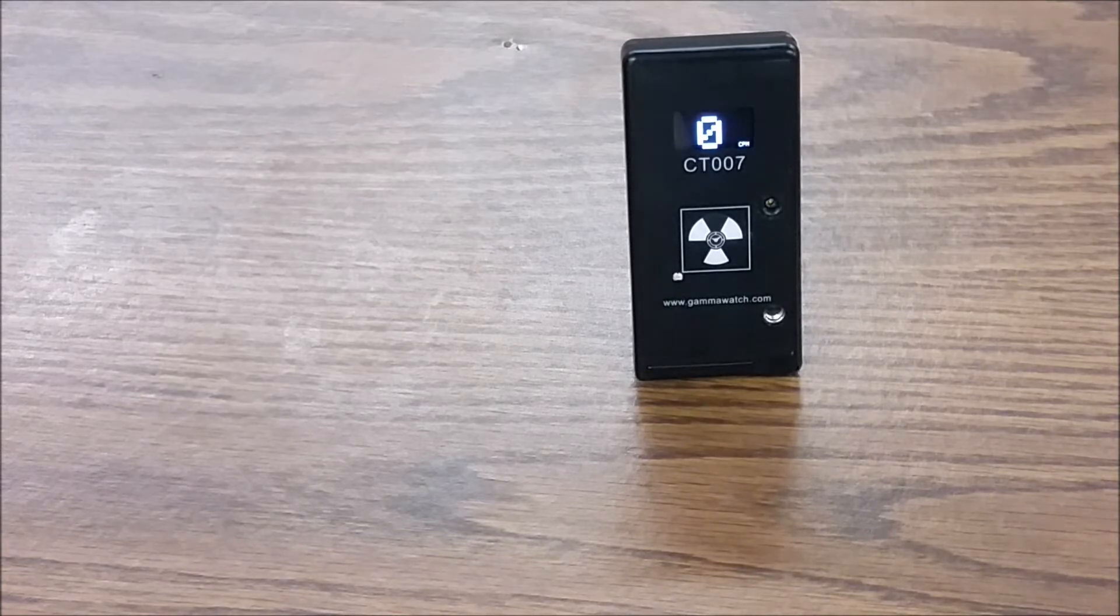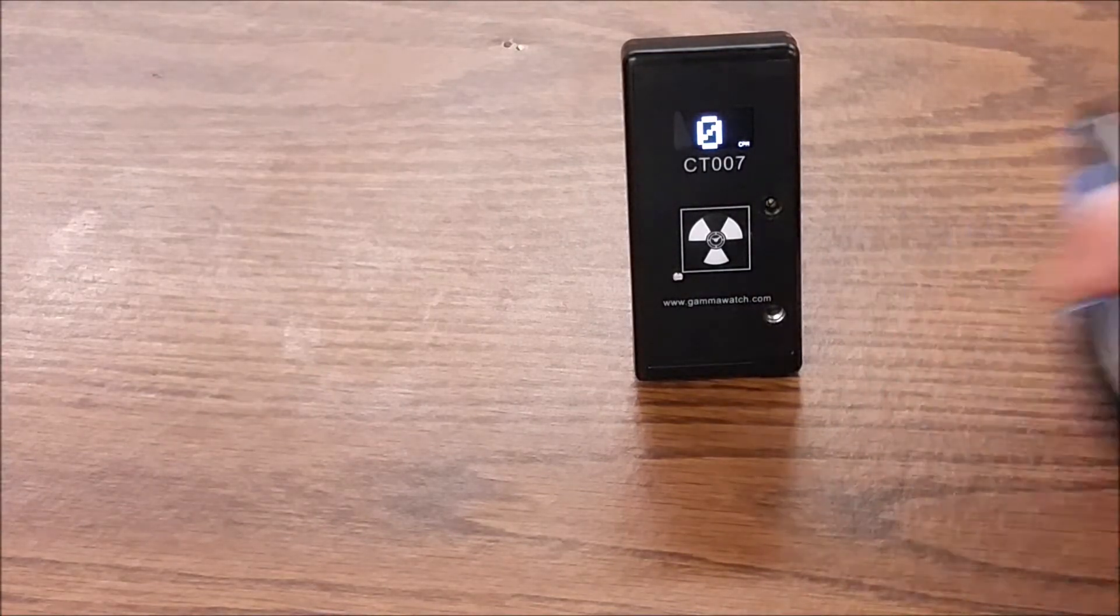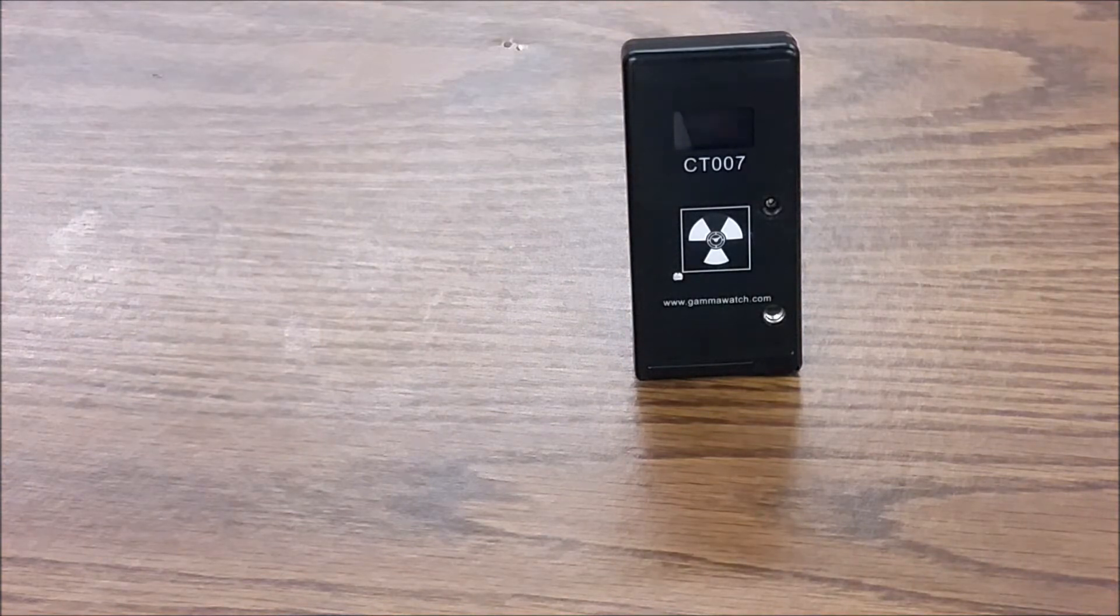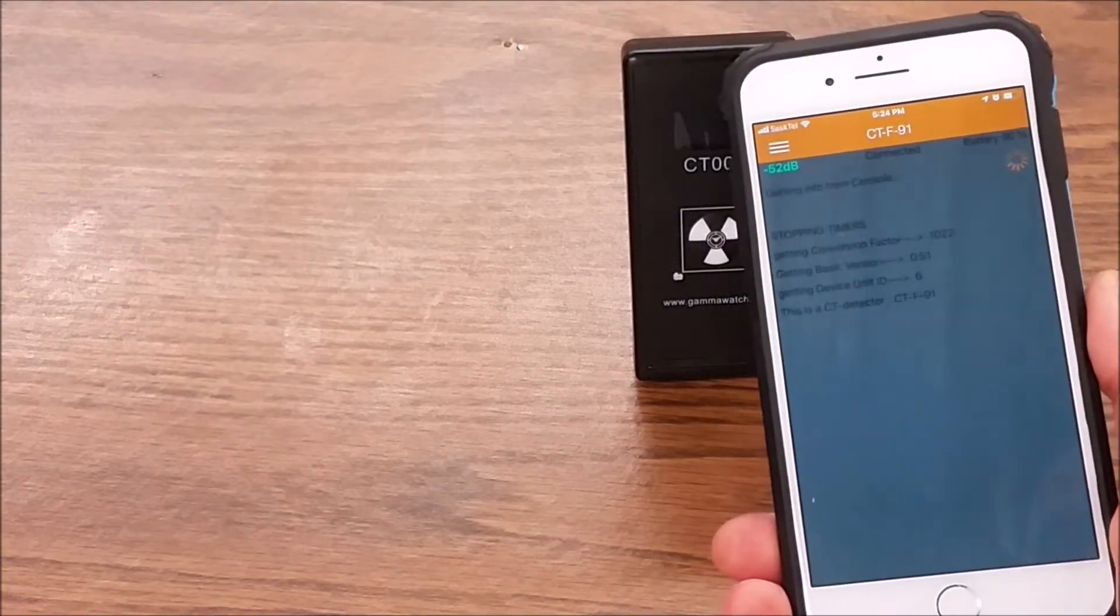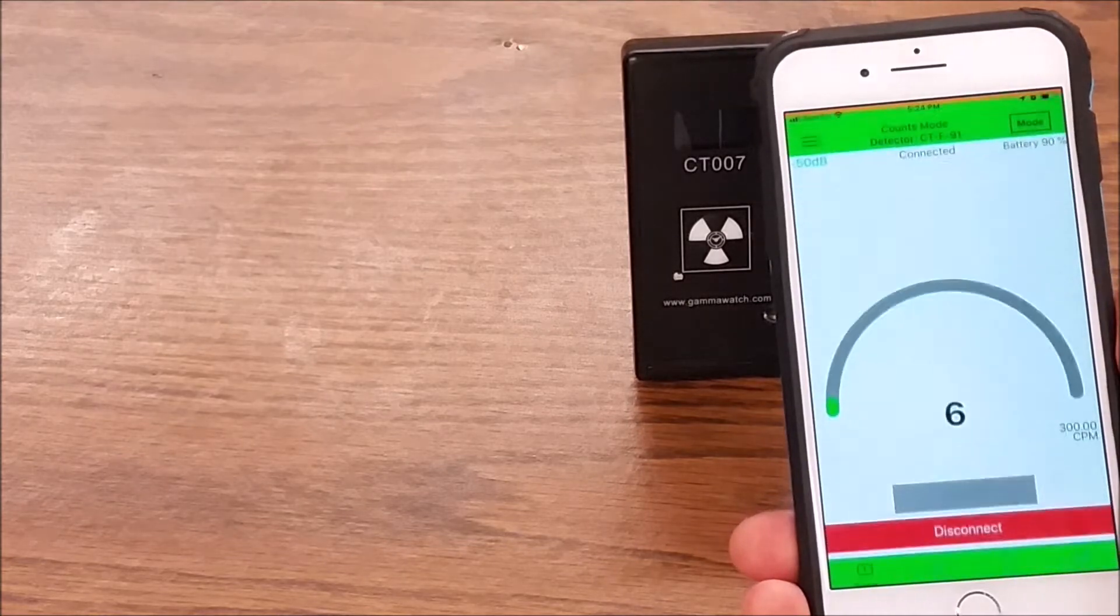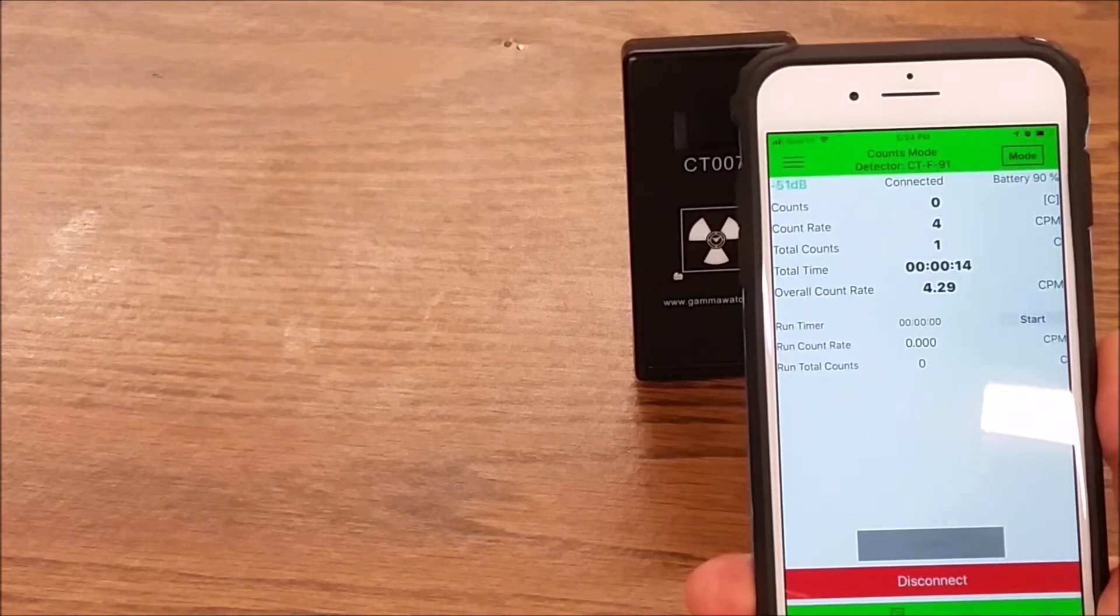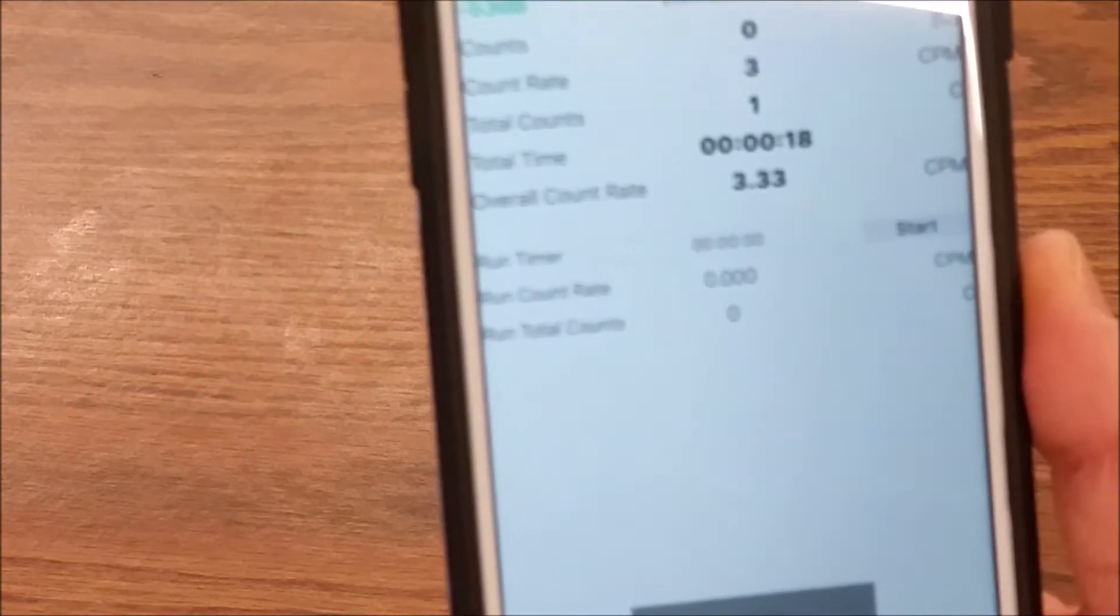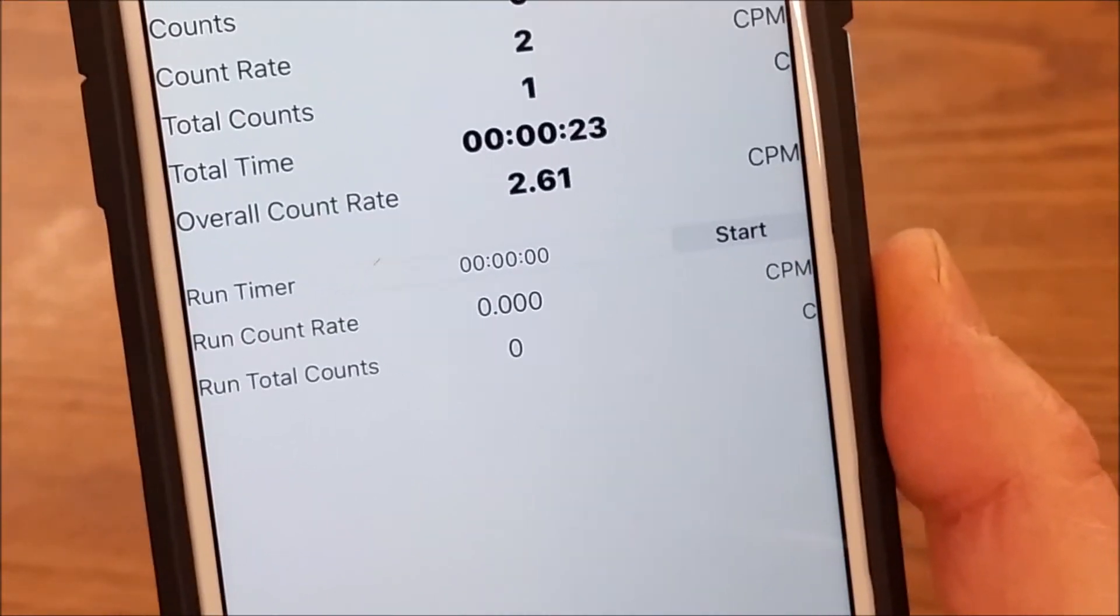As you have seen there we're not getting a whole lot of counts so we're going to connect our CT007T to our gamma guard app which allows us to run a scaler. Let me see if I can get this in here. Yeah so there's a scaler we can run it.